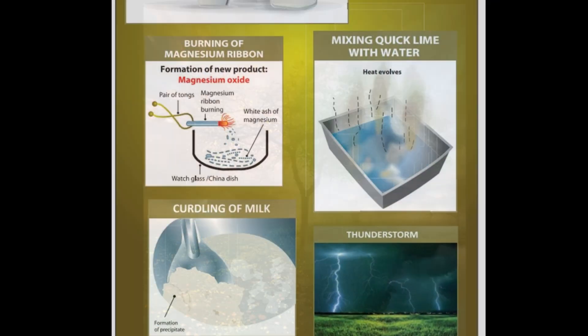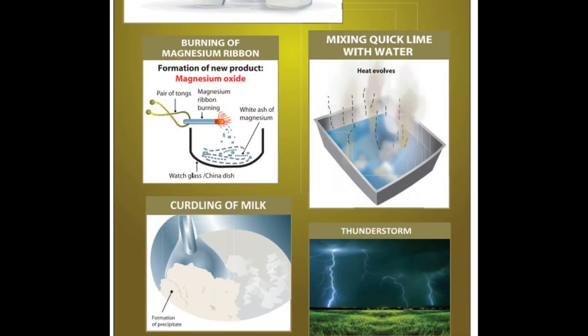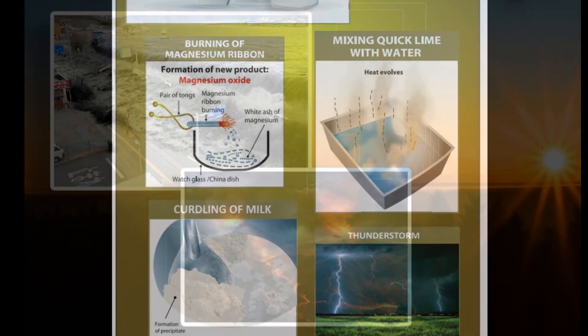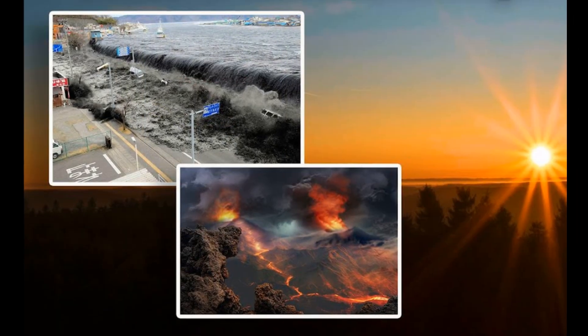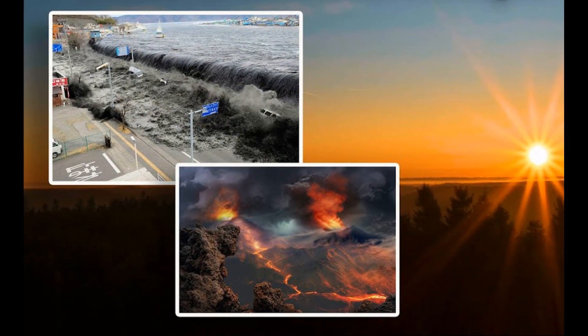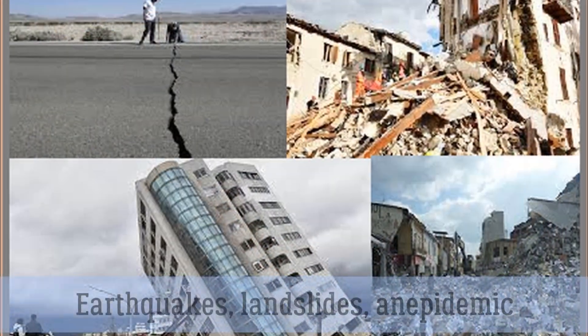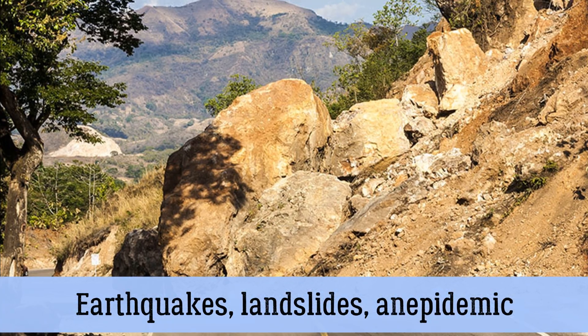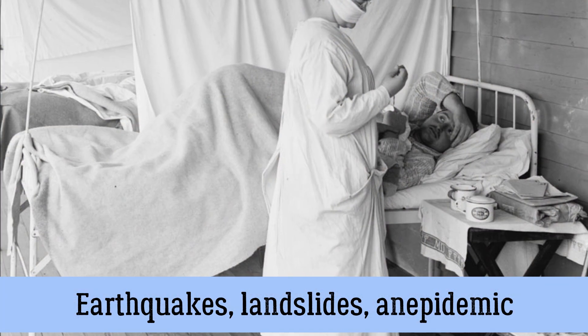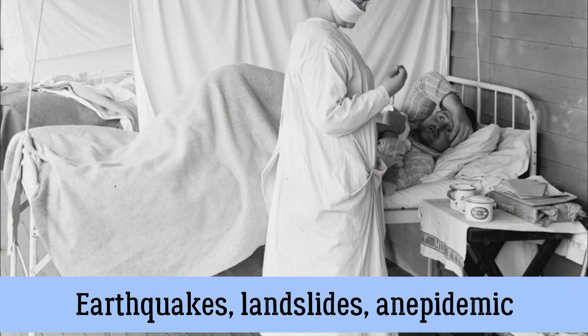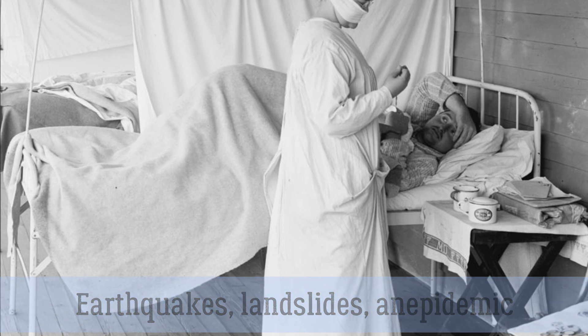Changes that are not repeated at regular intervals are called non-periodic changes. They occur at any time. For example, earthquakes, landslides, an epidemic, a person becoming sick, etc.